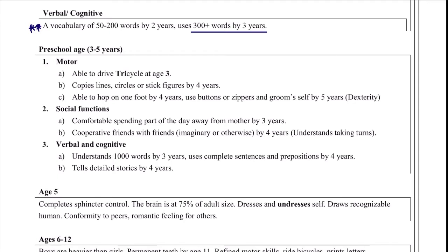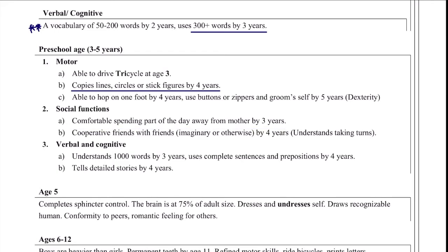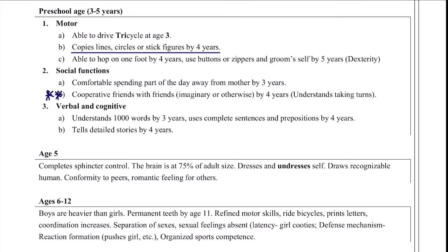In preschool age, motor skills develop to where they can drive a tricycle by age three and copy lines, circles, or stick figures by four years. Social functions include staying away from mother by three years and playing with other children — no longer parallel play. Around age three they may have imaginary friends. Verbally, they understand a thousand words by three years and use complete sentences and prepositions by four years, telling detailed stories by four years.